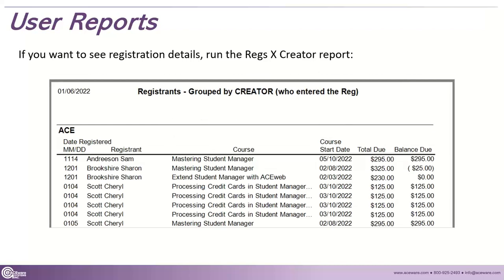You could also run the Registrations by Creator report, which gives a much more detailed breakdown — every person, when they were registered, a little more information about the course, who owes money and who doesn't. So in this case, maybe Sam Andreessen still owes money, but we know the ACE user is who enrolled the person. So you can say, 'Hey ACE, can you reach back out to Sam and get Sam's payment, please.'